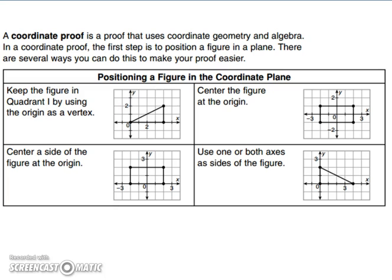A coordinate proof is a proof that uses coordinate geometry and algebra. In a coordinate proof, the first step is to position a figure in a plane. There are several ways you can do this to make your proof easier.